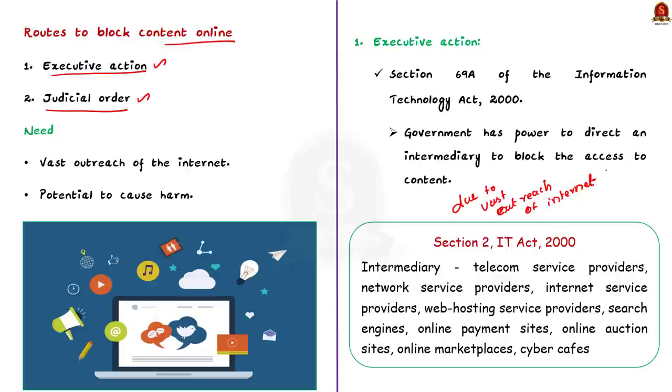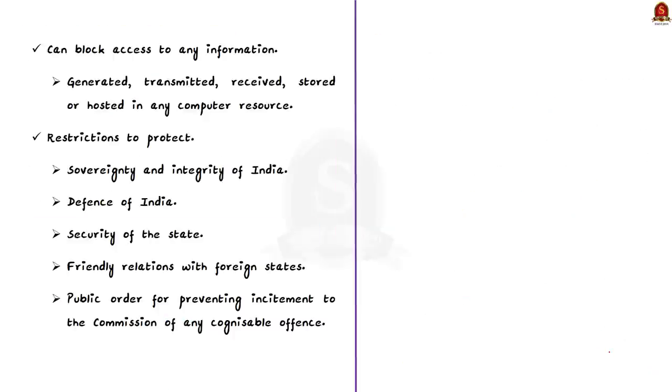Coming to Indian specific information, the government of India gets its power from section 69A of the Information Technology Act 2000. The section allows the government to direct an intermediary to block access to content available online. According to the definition under section 2 of the IT Act, an intermediary includes telecom service providers, network service providers, internet service providers, web hosting service providers, search engines, online payment sites, online auction sites, online marketplaces, and cyber cafes.